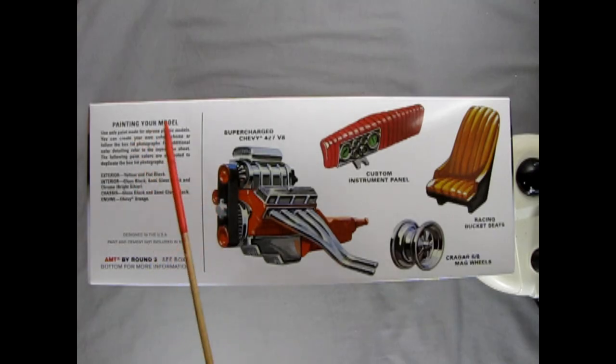Here is a suggestion for painting your model. Use only paints made for styrene plastic models. You can create your own color scheme or follow the box lid photographs. For additional color detailing refer to the instruction sheet.